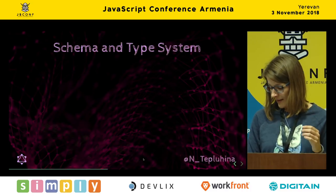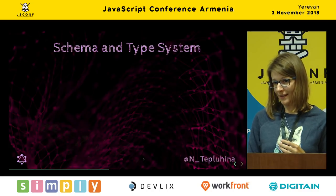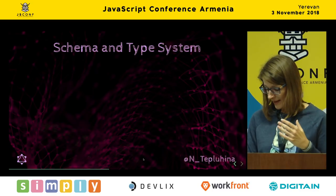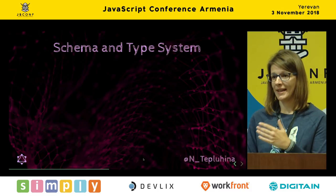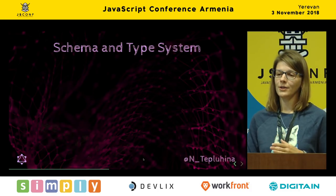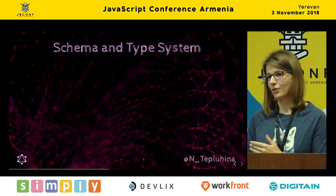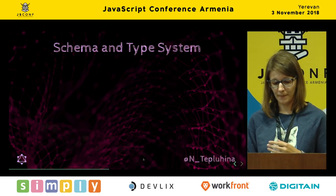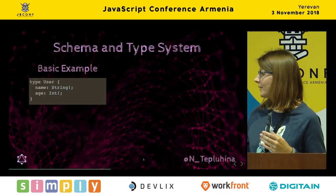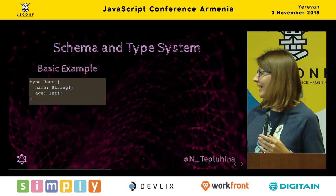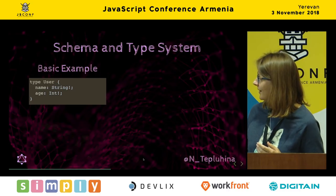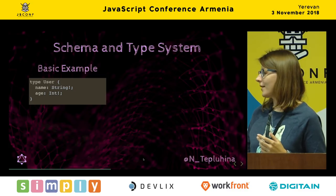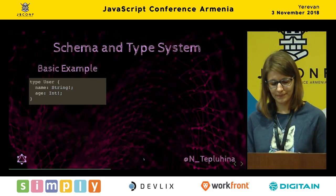Every GraphQL service defines a set of types, called a Schema, which describes all the data you can fetch from that service. All queries are validated and performed against this Schema. The Schema is built with its own language called Schema Definition Language, or SDL, and it's strongly typed. For example, a basic type 'User' has two fields: name as String and age as Integer. An exclamation mark means both fields are required — you cannot create a user without providing name and age.